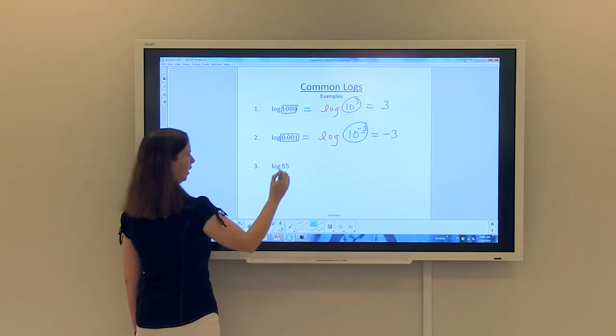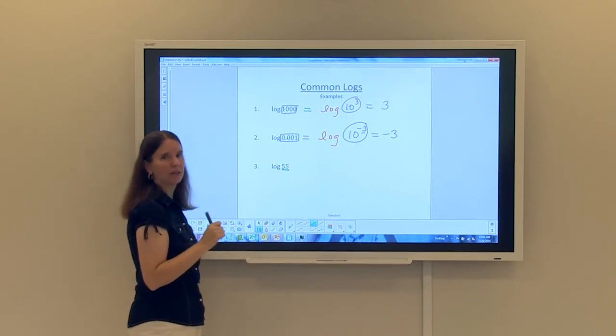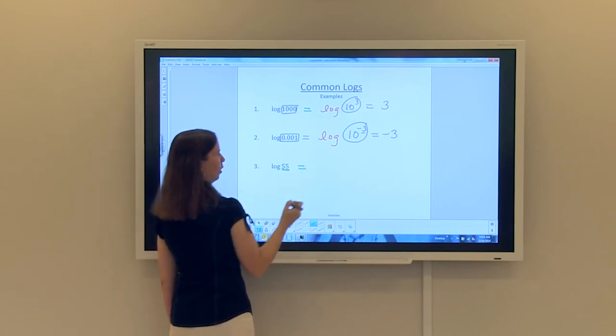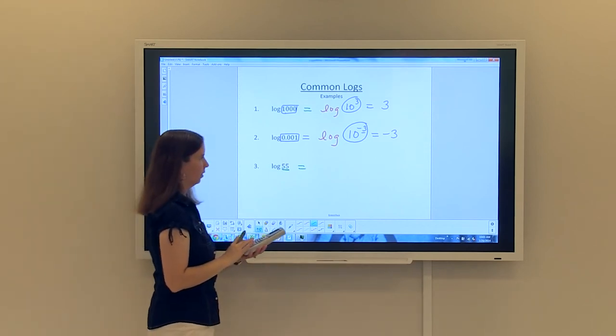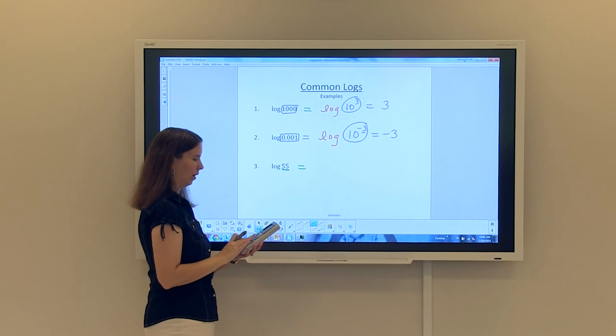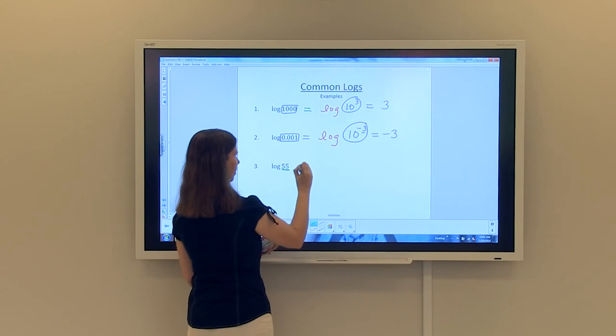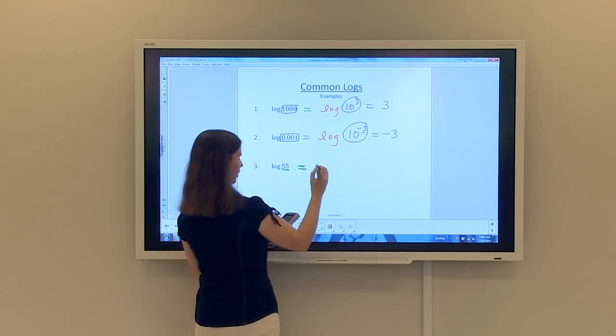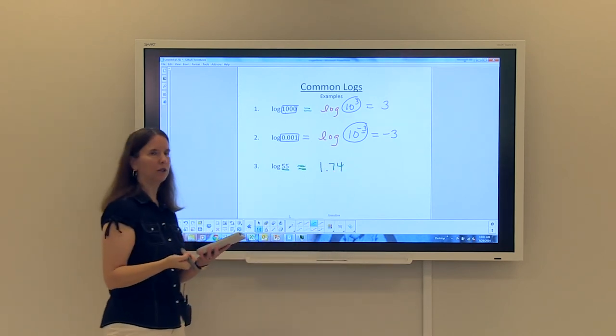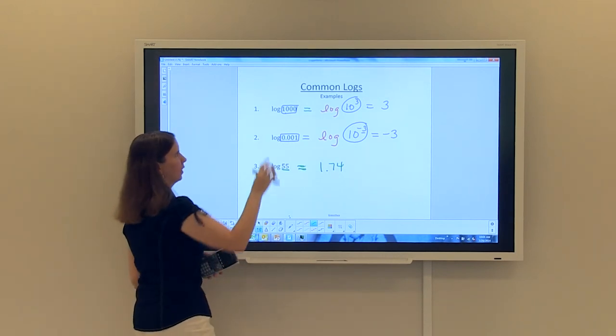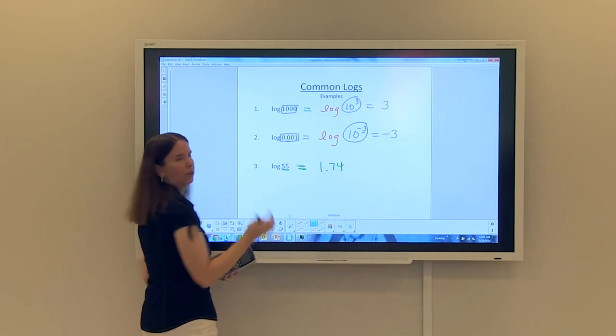Now, the last one that we have, we have 55. 55 cannot be rewritten as a base of 10. So the only way for us to work this problem is to use a calculator. So on your calculator, you have a log button. If you simply just touch log and then 55, and some of you may have to close the parentheses, and you will end up with, I'm going to make this approximately, I'm just going to take it two decimal places, would be approximately 1.74. So you're not going to be able to turn everything into a base of 10. Remember, it's only those things that have a 1 with 0s after it, or a decimal place with 0s before, and then a 1 at the end.